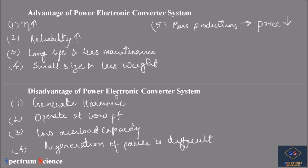Now let us look at the disadvantages of power electronic converter systems. First, they generate a lot of harmonics, which is harmful on both the input and output sides. On the input side, other components connected to the supply line will get affected and heated, and they will generate noise. Therefore, a filter must be inserted at the input side.